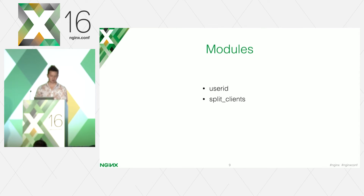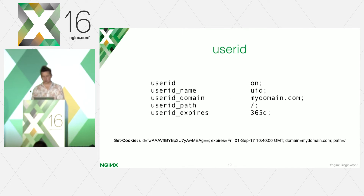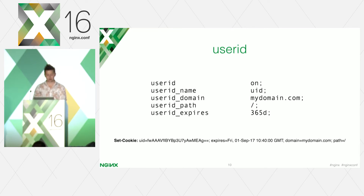To build A/B testing infrastructure we need two modules. The first module is userid, the second is split_clients. Both of those modules are included by default in nginx and are fairly simple to set up. The userid module is designed to generate a unique identifier for visitors and set a cookie. We will split the audience into groups by this identifier. In its simplest form, the configuration should only include the name, the lifetime of the cookie, the domain, and the cookie path.